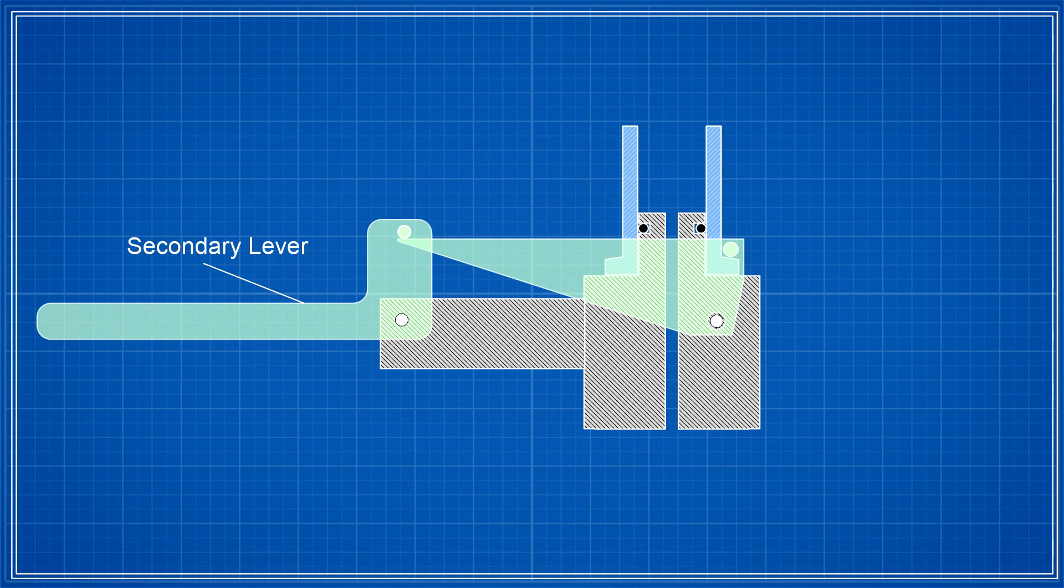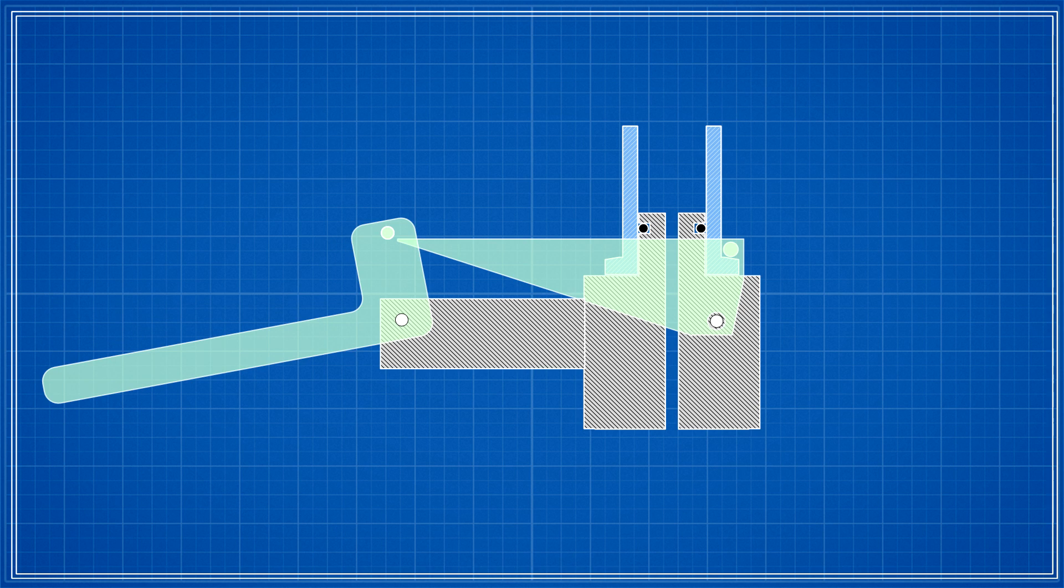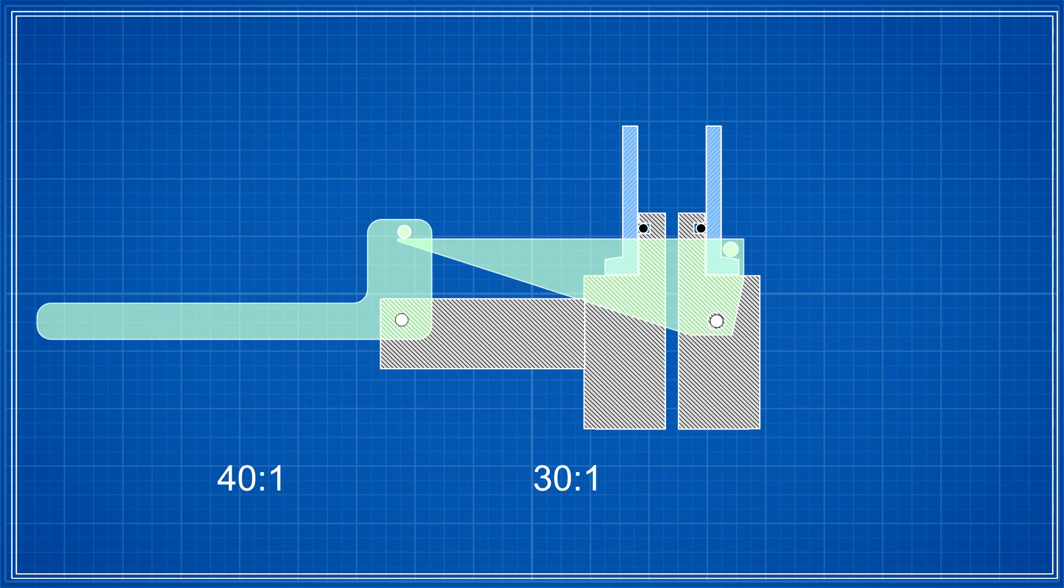And so we add a secondary lever with its own pivot, which allows us to shorten the entire mechanism. This arrangement effectively multiplies the two lever ratios, so if one's 40 to 1 and the other is 30 to 1, we achieve the same 1200 to 1 goal.